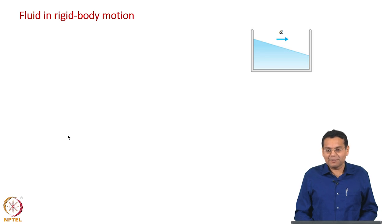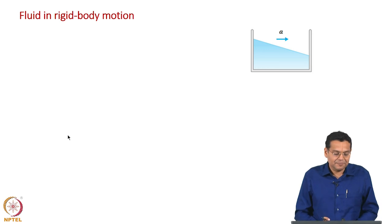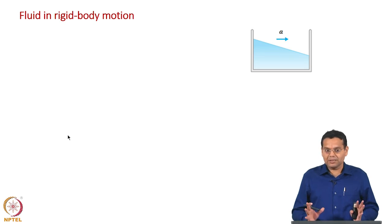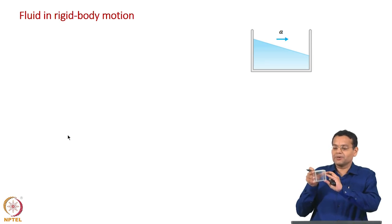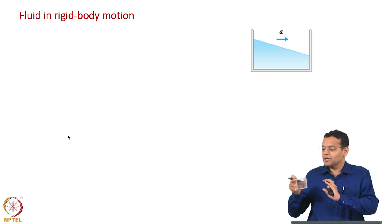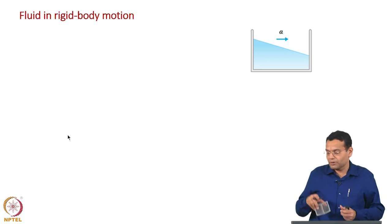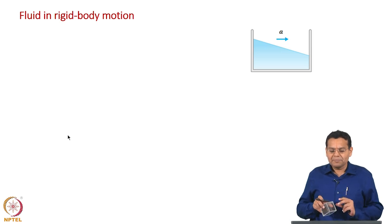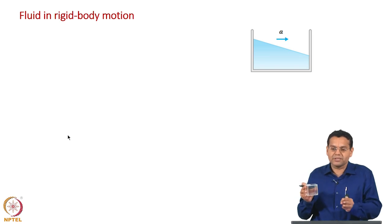Let us move to the next level of application. The previous level dealt with fluid under static condition. Now we allow the fluid to move, but not in a general way — as a rigid body, the entire body of fluid should move. I have a container partly filled with liquid and it is moving. This is called translation; the entire body could also rotate, which is also rigid body motion.